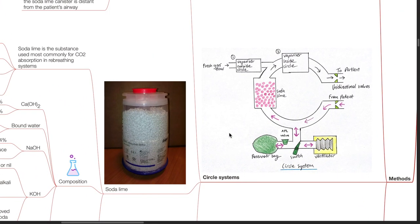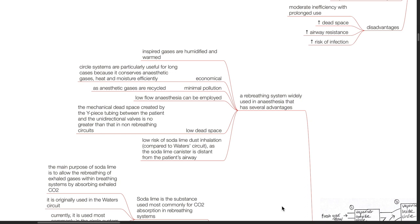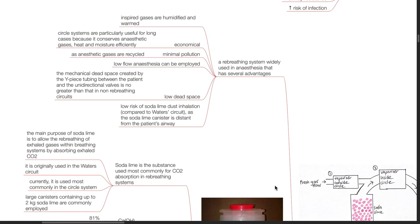Circle systems: a circle system is a re-breathing system widely used in anesthesia that has several advantages. Inspired gases are warmed and humidified. It is economical. Circle systems are particularly useful for long cases because they conserve anesthetic gases, heat, and moisture. There is minimal pollution as anesthetic gases are recycled, and low-flow anesthesia can be employed. There is low dead space — the mechanical dead space created by the Y-piece tubing between the patient and the unidirectional valves is no greater than that in non-re-breathing circuits.